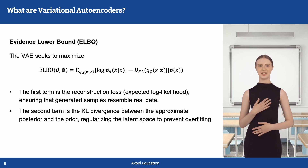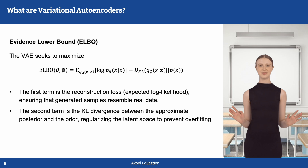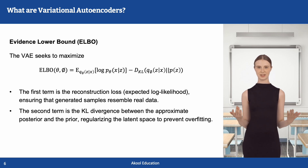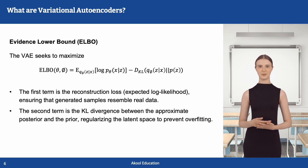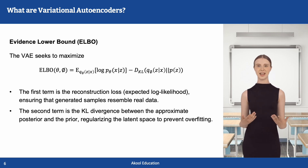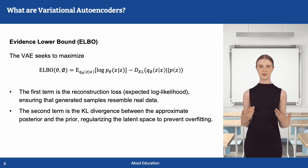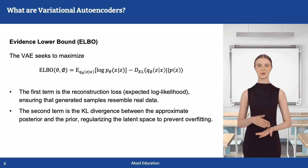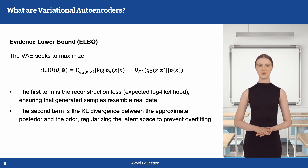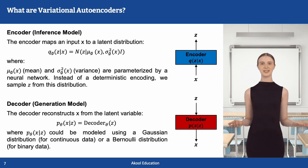A variational autoencoder seeks to optimize parameters theta and phi to maximize the evidence lower bound. The evidence lower bound consists of two terms: a reconstruction loss that ensures the decoded output is similar to the input, and a KL divergence term that regularizes the latent space by ensuring the variational distribution is close to a prior distribution, typically a standard normal distribution, in order to prevent overfitting.